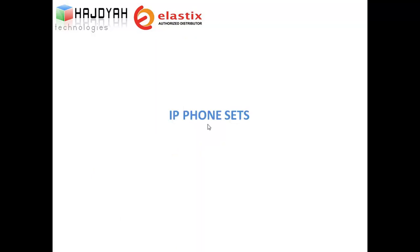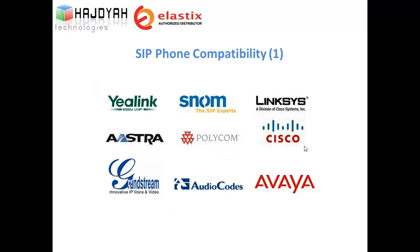Elastic is compatible with all SIP phone sets. We have discussed the complete Elastic PBX features. Now, what about phone sets — does Elastic have its own IP phone sets? Elastic is compatible with all SIP phones; you can even use Cisco or Avaya phone sets, as well as other brands like K-Links, NOM, Lexus, Astro, Polycom, Grandstream, and AudioCode.